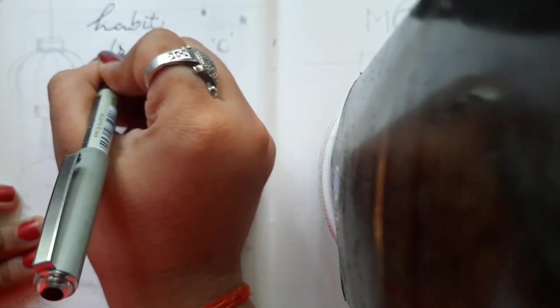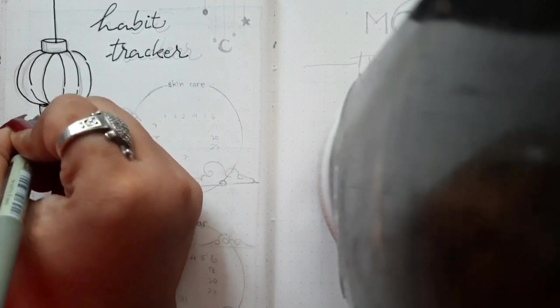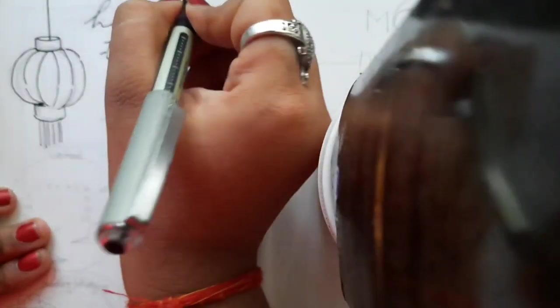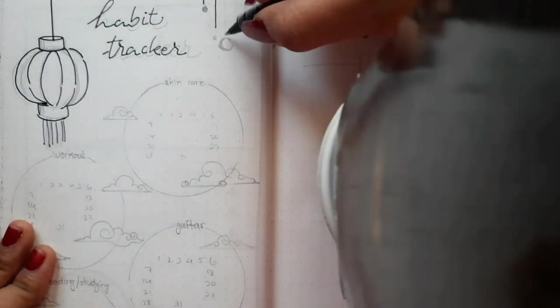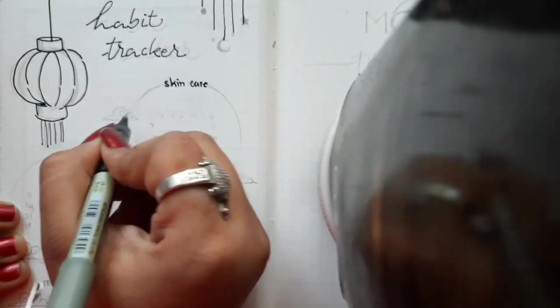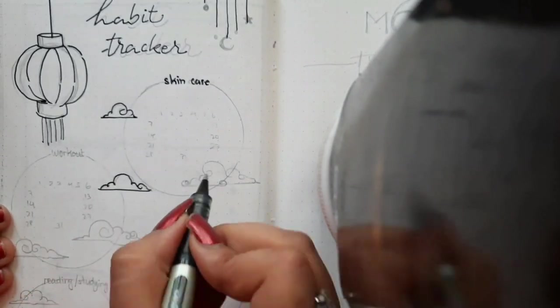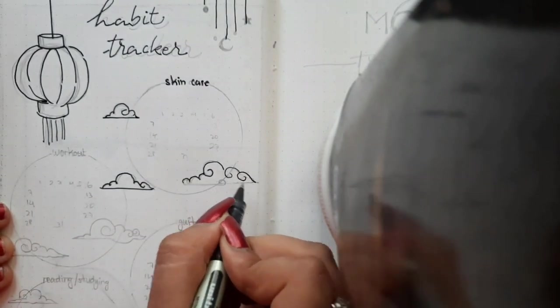This was pretty complex to explain, but I'll try my best. Starting off, we're gonna write habit tracker at the top middle part of the page, and then we're gonna illustrate a Chinese lantern or something like that at the left side of the page, and then we're gonna do some minimal illustration on the right side of the page. For this month, I'm gonna track four habits which is of top priority for me, but this can vary.